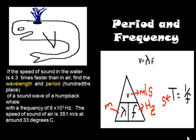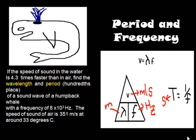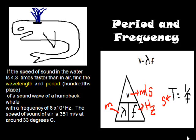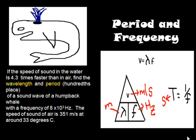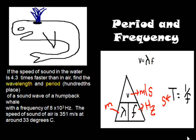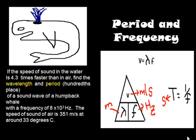So here's a little practice problem. If the speed of sound in the water is 4.3 times faster than in air, let's find the wavelength and period of a sound wave produced by a humpback whale with a frequency of 8 × 10³ Hertz. The speed of sound in air is 351 meters per second at about 33 degrees Celsius, which would be water temperature in this problem.